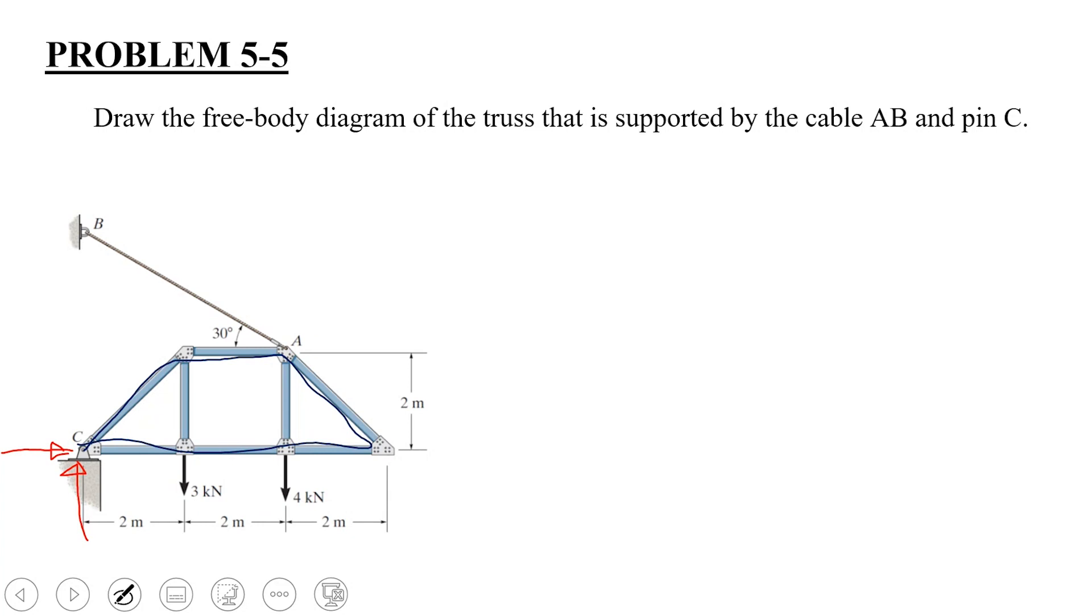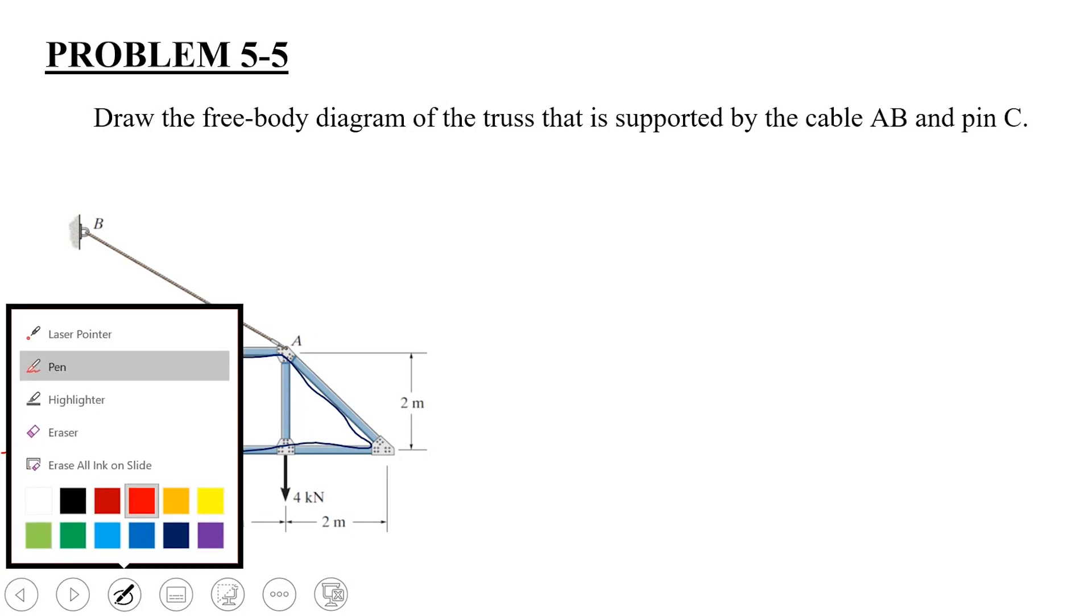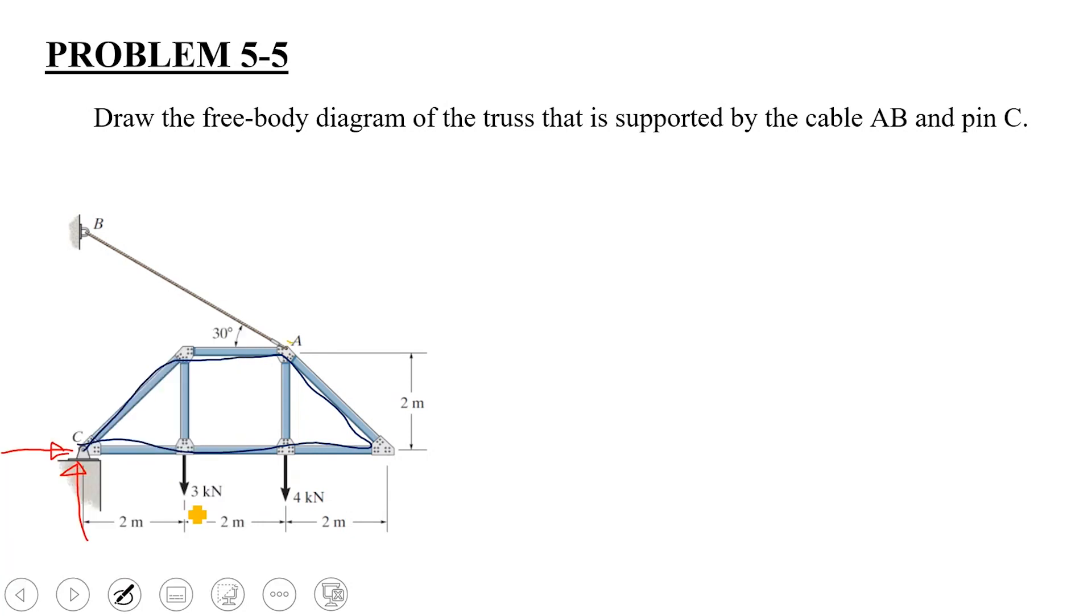In addition to this, point A rope is removed. So when you remove this rope, you will get tension in this rope which would be acting at an angle of 30 degrees. In addition to this, you have two applied forces: 3 kilonewton and 4 kilonewton. So now the free body diagram is complete.